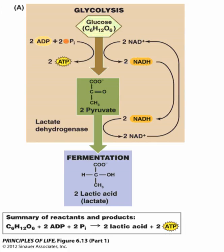First we'll talk about lactic acid fermentation. Glucose is split and we produce two ATP, and NAD gets reduced into NADH. Now what determines the type of fermentation is the enzyme complement. In this case, if an organism has lactate dehydrogenase, then it's going to undergo lactic acid fermentation. We happen to be one of those organisms that have this enzyme.